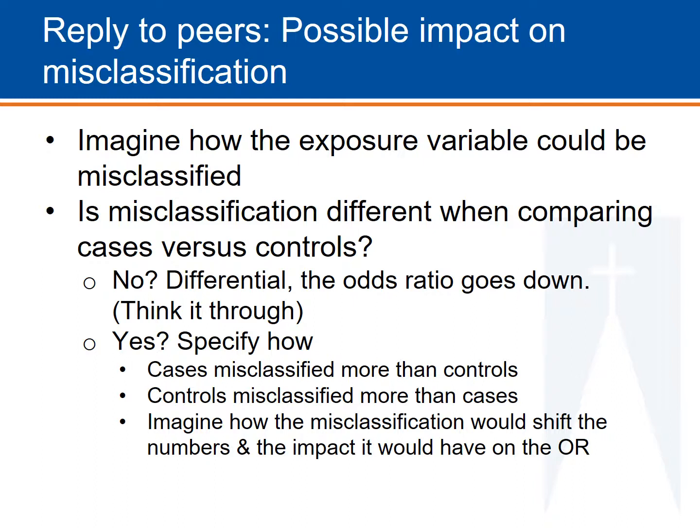The purpose of this is to think through the type of misclassification to imagine how it would influence the odds ratio reported by your peers. Start by asking whether the misclassification is likely to be different between cases and controls. If not, misclassification would always cause the odds ratio to go down. If there is a difference, specify how. Are cases more likely to be misclassified? Specifically, how are cases more likely to report being exposed or not exposed? Imagine how the misclassification would look so you can create a scenario to shift the numbers, then consider the impact on the odds ratio.